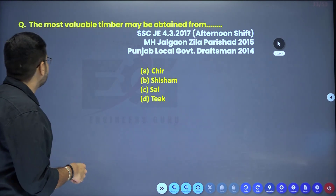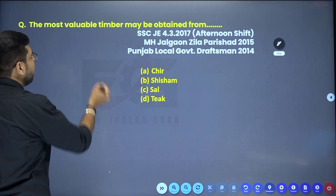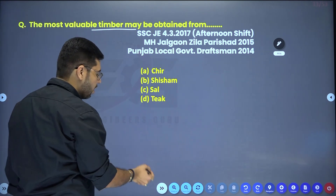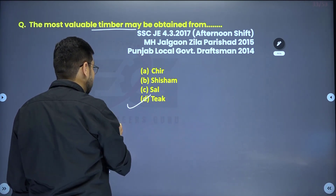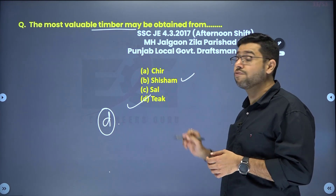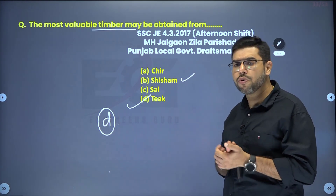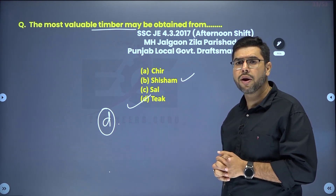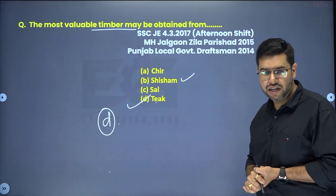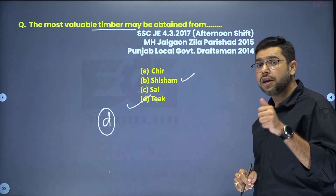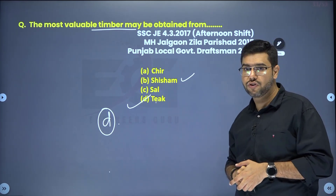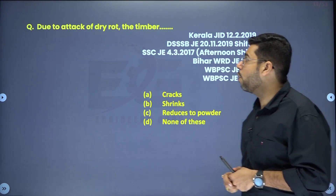Let us see: the most valuable timber may be obtained from which source? In terms of value, teak is the most valuable timber. Teak is workable. Shisham is the strongest timber, but it is not the most valuable because working with shisham — cutting etc. — is very difficult, and shisham does not have as good a finish as teak. That is why teak has a much higher market price. So teak is the most valuable timber.